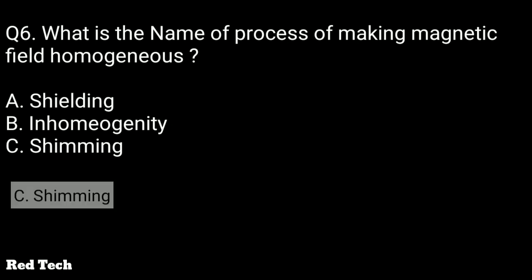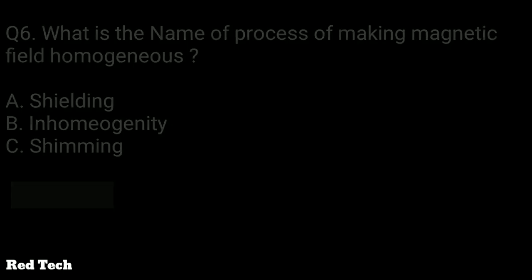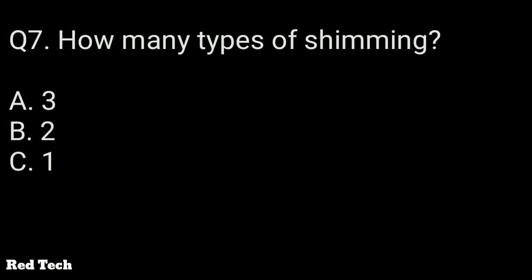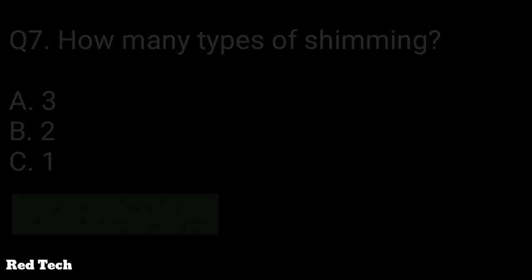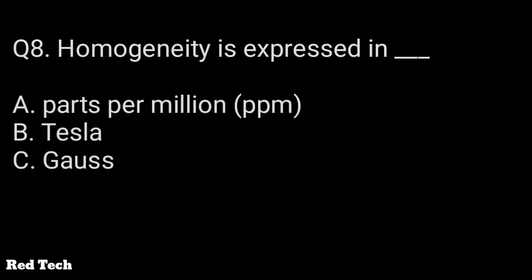Question number six: what is the name of the process of making the magnetic field homogeneous? The options are shielding, inhomogeneity, or shimming. The right answer is shimming. Question number seven: how many types of shimming are there? The options are three, two, or one. The right answer is two — active shimming and passive shimming.